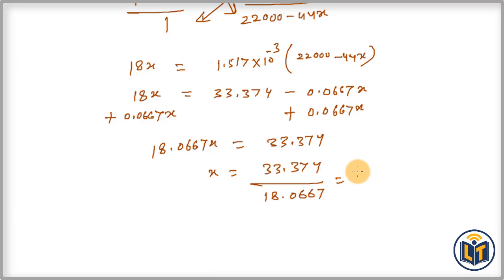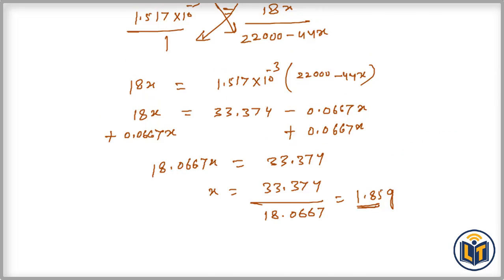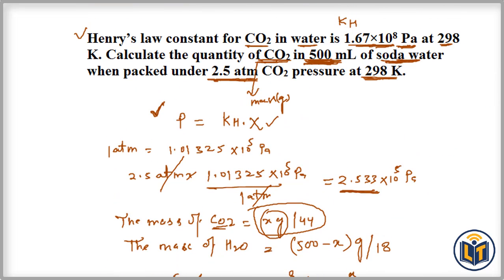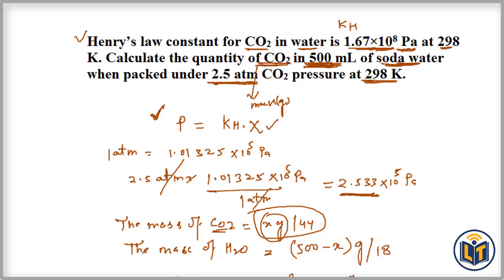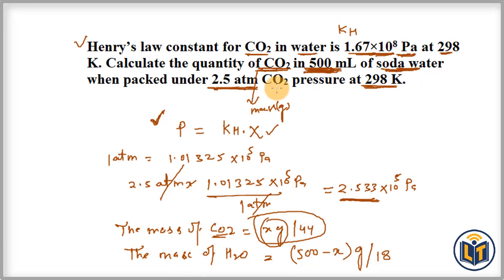The mass of carbon dioxide in 500 ml of soda water is approximately 1.85 grams. This was calculated using Henry's law, P = KH · x, where P is pressure, KH is Henry's constant, and x is the mole fraction of the solute.